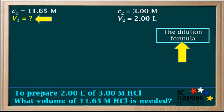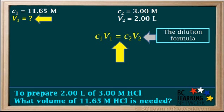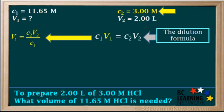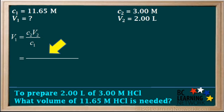To calculate the initial volume, V1, we use a dilution formula, which is C1V1 equals C2V2. This time, we rearrange the equation to solve for the unknown, V1. And it comes out to V1 equals C2V2 over C1. We now insert the given values into the equation.